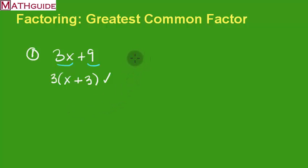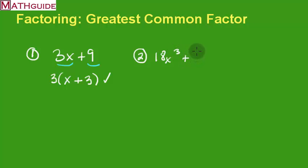That takes us to our second problem. Here's another problem, and this one is a little bit harder: 18x cubed plus 50x squared. This is harder because not only do we have more factors with the numbers, but we also have some letters involved.